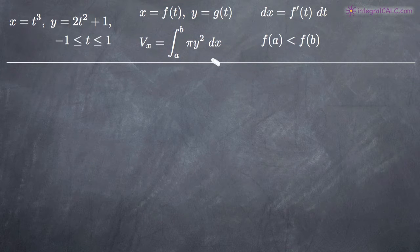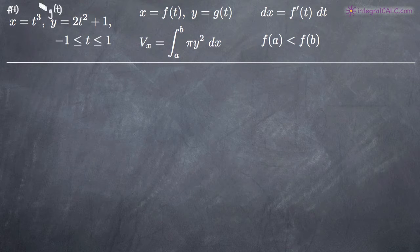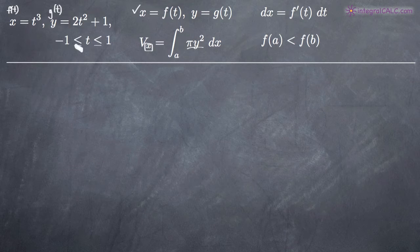I've got several formulas up here. Whenever we're dealing with parametric curves, the equation for x is representative of f of t, and y represents g of t. So x is the same thing as f of t, and y is the same thing as g of t. The formula we're going to use for volume is the V sub x formula — x meaning we're revolving around the x-axis. The pi y squared inside the integral is specific to revolving around the x-axis, and a and b are our limits of integration.